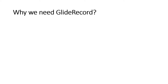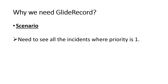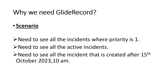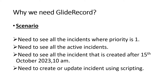Why do we need GlideRecord? Think about the importance of SQL — how you can query and get results. For example, in our incident table, if we want to see all incidents where priority is one, or all active incidents, or all incidents created after October 15th 2023 at 10 a.m., or if we want to create or update an incident using scripting — all of this is possible with GlideRecord. And the good thing is we don't need to use any SQL here.